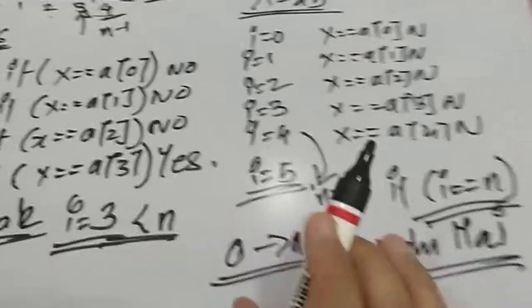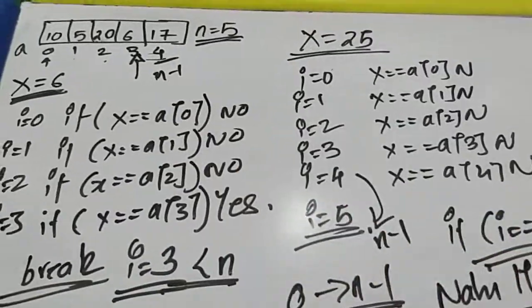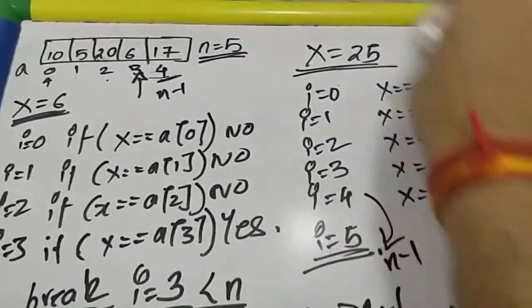So what is our terminating condition for the for loop? When we iterate, the code will be something like this: